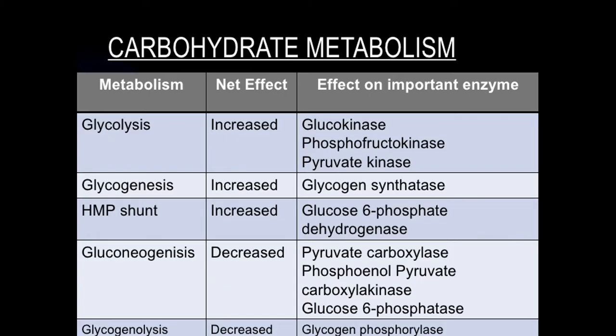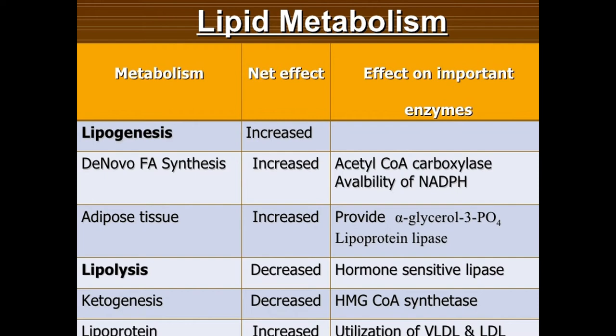Insulin and growth hormone act synergistically to promote growth. In experimental animals, giving insulin alone without growth hormone does not promote growth, and giving growth hormone alone without insulin also does not promote growth. For proper growth, both insulin and growth hormone must be given together. Insulin causes movement of amino acids into cells and inhibits gluconeogenesis, saving amino acids for growth purposes. Therefore, growth hormone and insulin act synergistically for the promotion of growth.